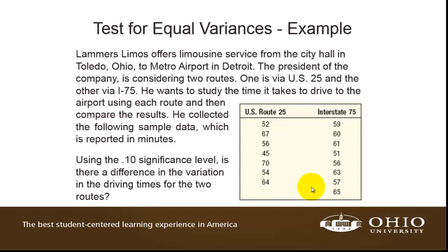Let's take a look at an example. We have a limo service that offers transportation from Toledo, Ohio to the airport in Detroit. The president of the company is considering two different routes: US-25 and I-75. What he wants to know is not whether the travel time is the same, but whether the variation in the travel times is the same. In other words, are the two travel times equally predictable? Using a 10% level of significance, we want to know whether there's any difference in the variation in the travel times of the two different routes.